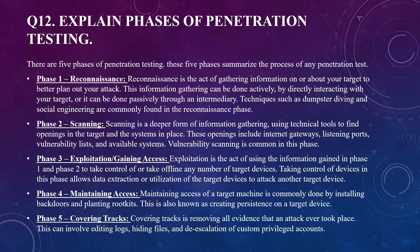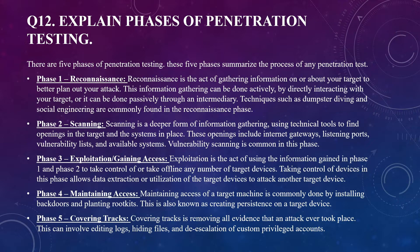Taking control of devices allows data extraction or utilization of target devices to attack another device. Phase four is maintaining access — commonly done by installing back doors and planting rootkits, also known as creating persistence on a target device. Phase five is covering tracks — removing all evidence that an attack ever took place, which can involve editing logs, hiding files, and de-escalation of custom privileged accounts.